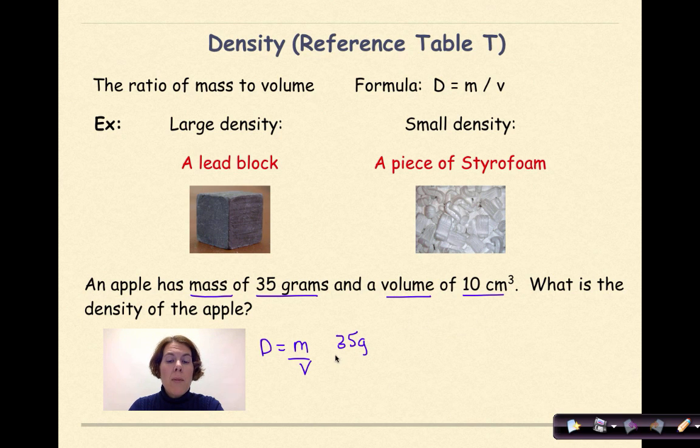The volume of our apple is 10 centimeters cubed. So if I divide 35 by 10, I get 3.5 grams per centimeters cubed.